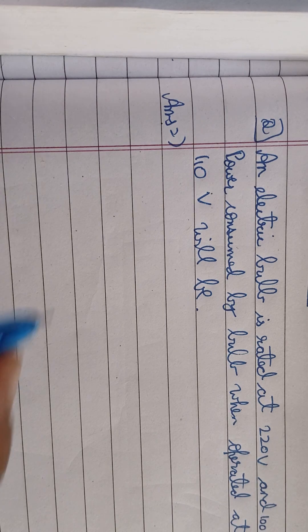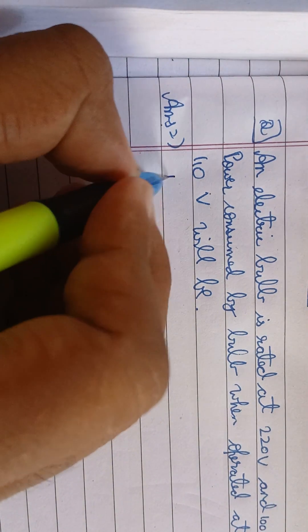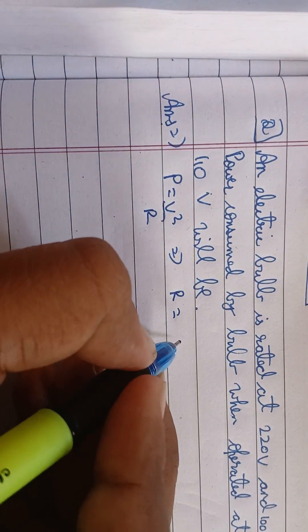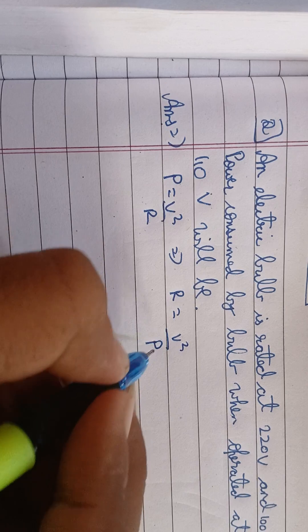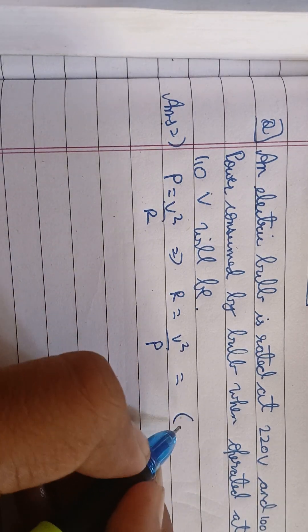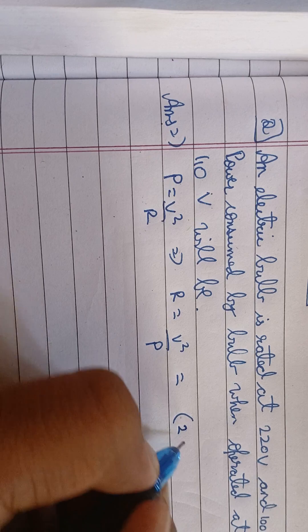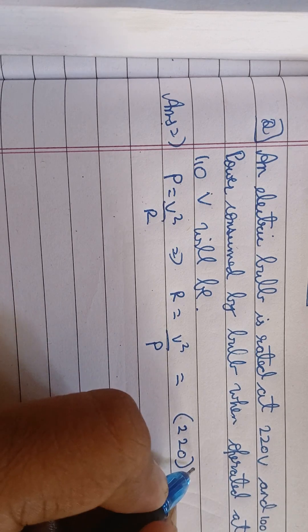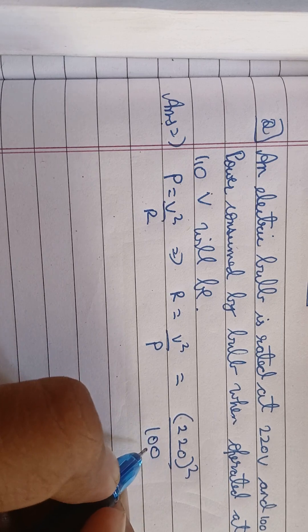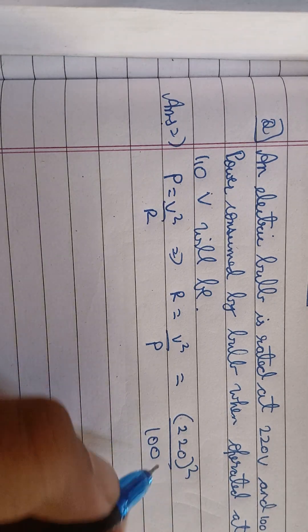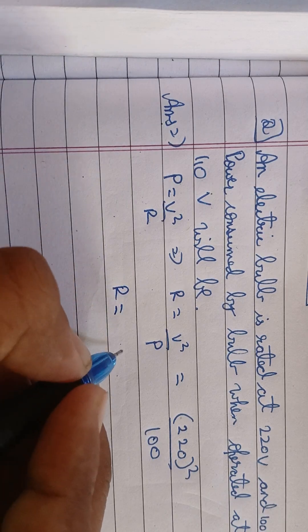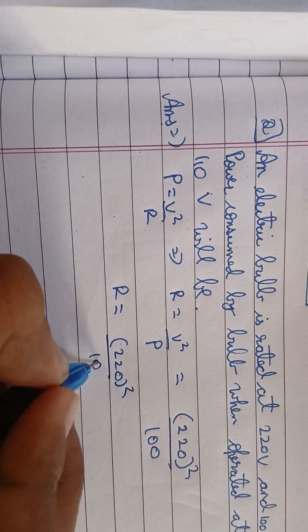We know that P is equal to V square by R. Therefore, R is equal to V square by P. Now substitute values: R is equal to 220 square divided by 100.